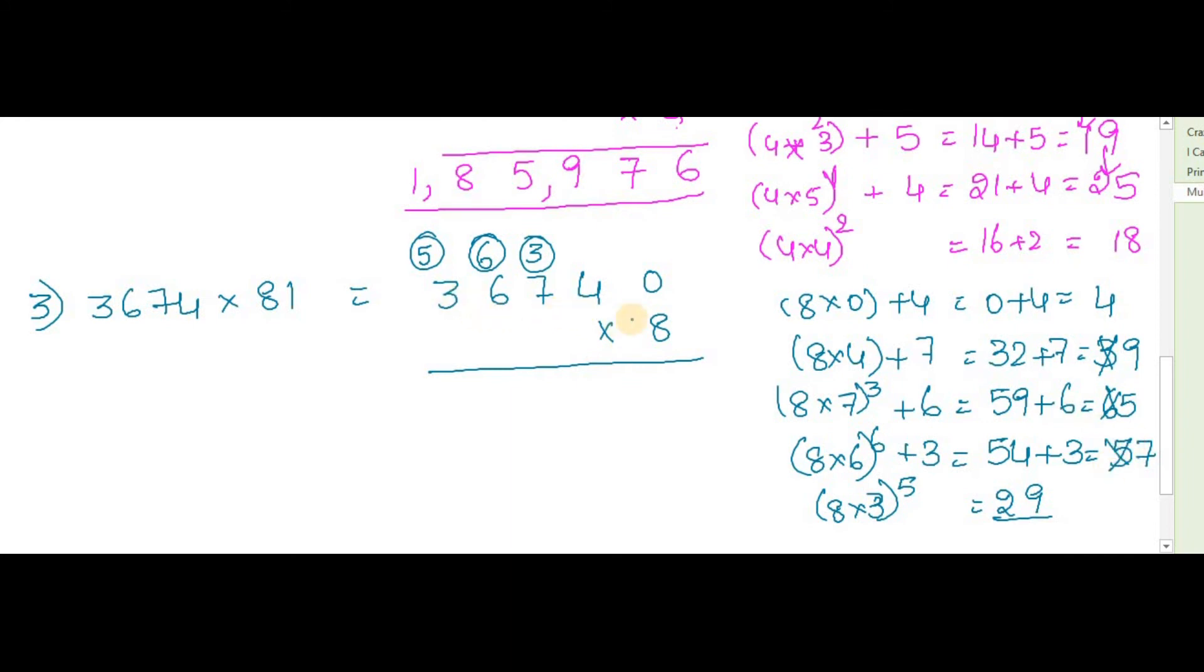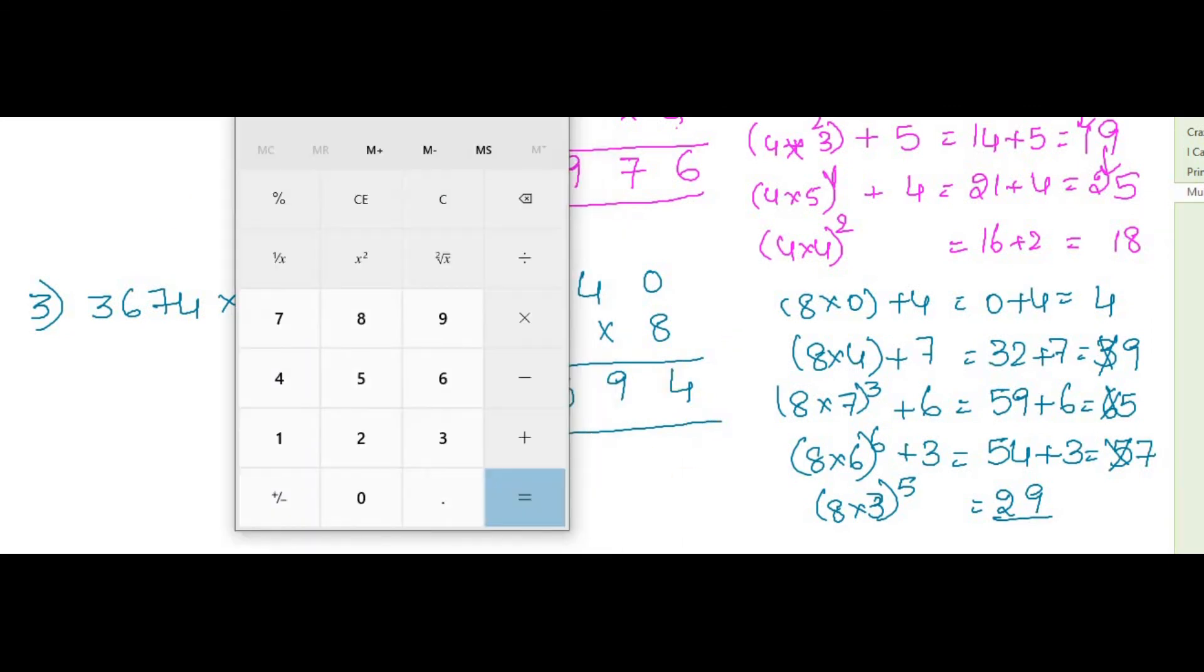Just write only the ones place, don't write the carry because those all belong to carry. 5 belongs to carry. So we will write from the last: 4, 9, 5, 7, 9, and 2. So the answer will be 297594.